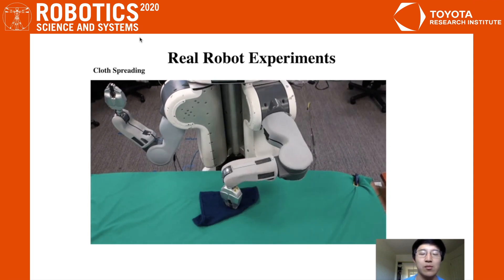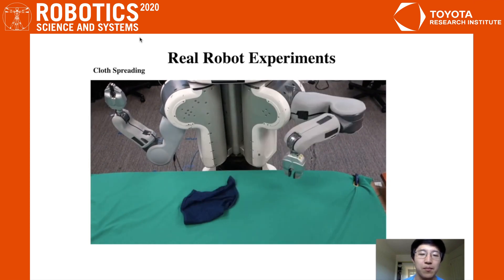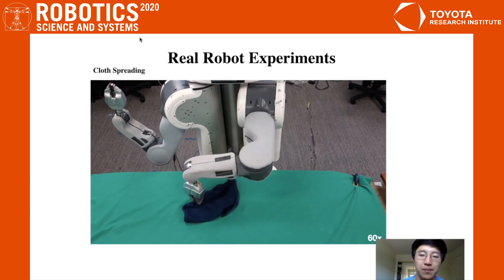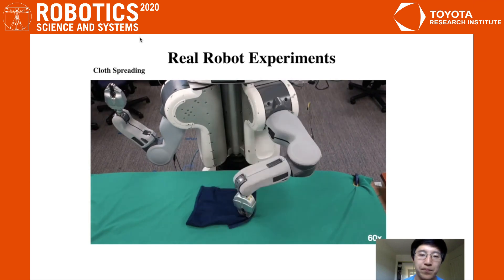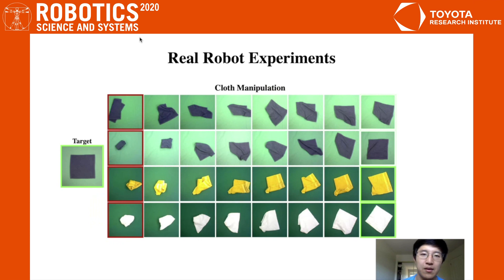Understandably, since it's much more complicated than the rope. But eventually, the robot does successfully spread it out. Note that we train the same policy with different cloth textures, so it's able to generalize across varying colors of cloth, as well as different start states.